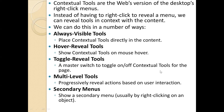To achieve contextual tools, there are different ways. The first is always visible tools. The second is hover reveal tool. The third is toggle reveal tool. The fourth is multi-level tool, and the fifth is secondary menus.